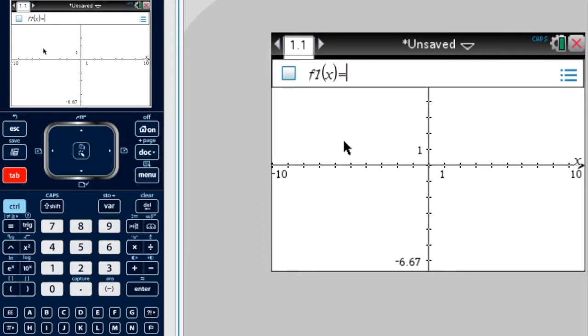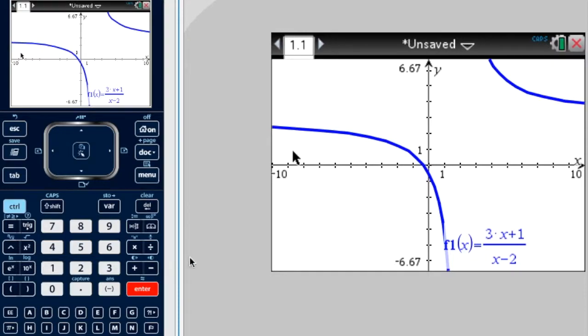And enter 3x plus 1. Now it's probably best we use brackets. Bracket, 3x plus 1. Move outside the bracket, over, divided by, bracket again, x minus 2. Enter. So there's our first function, the left-hand side.